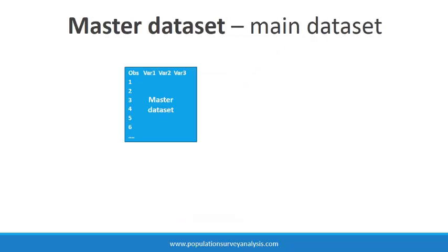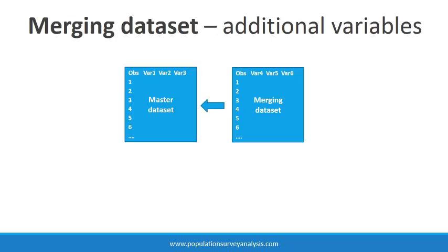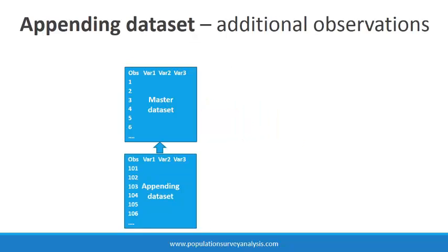The master dataset is the main dataset, usually organized by the unit of analysis. For example, the master dataset would be women if we were answering a research question about pregnancies. The merging dataset contains the variables we are adding to the master dataset, and the appending dataset contains the observations we are adding to the master dataset.